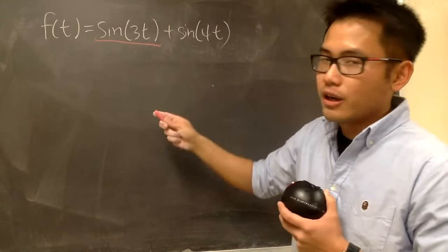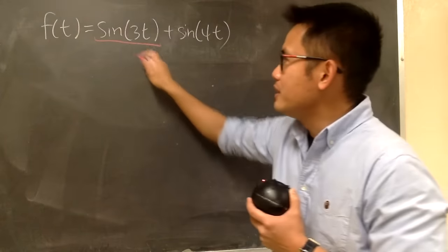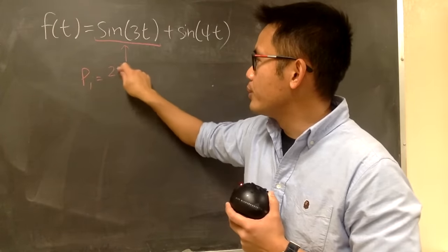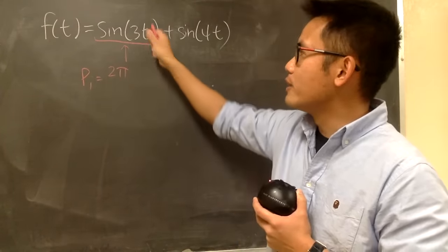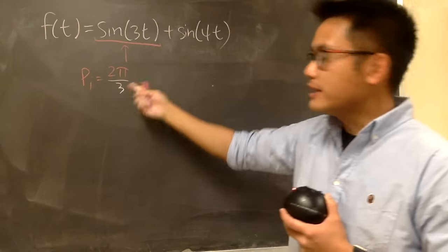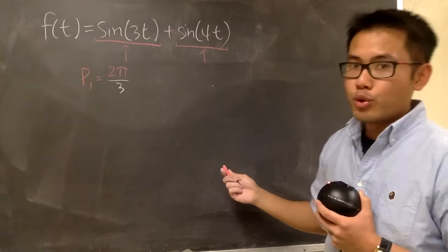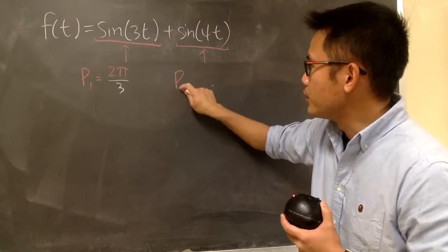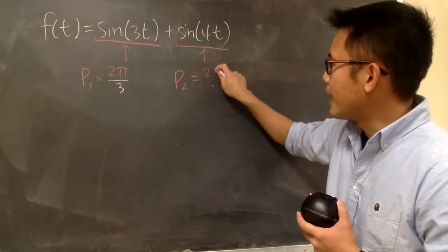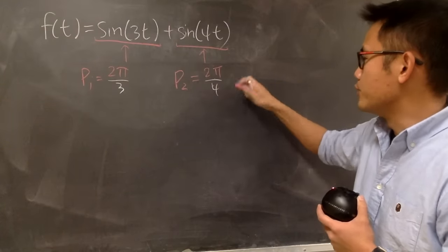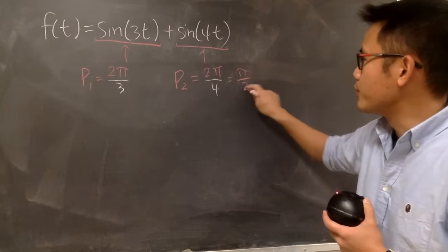So just like earlier, the period for sin of 3t, let me write it down p₁. This is equal to 2π over 3 in this case. And that's it. We cannot simplify this. And for the second one, sin of 4t, the period of this, I will write down p₂. This will be 2π over 4. And this is, of course, you can reduce that to get π over 2.